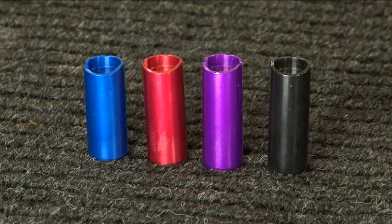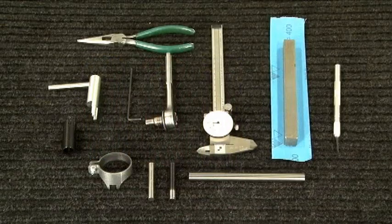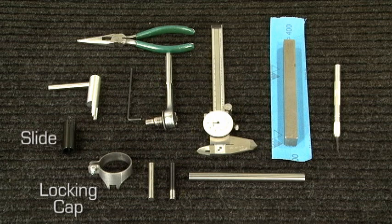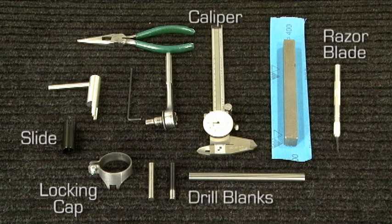Note each slide varies in overall length and is easily identified by color. The key components are as follows: the slide, a locking cap, a caliper, a razor blade, and the proper drill blank for reference. Drill blanks or rods are readily available through any tool or parts distributor, such as McMaster-Carr, etc.